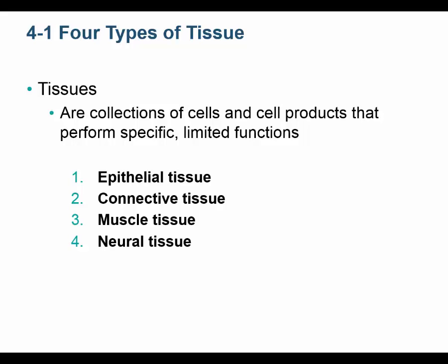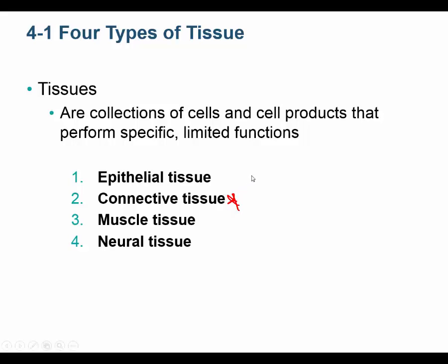The four primary tissue types are: epithelial tissue, connective tissue, muscle tissue, and neural tissue. Probably the hardest one is connective tissue, probably because it's the most diverse. But none of them are really that hard. Let's look at epithelial tissue first.